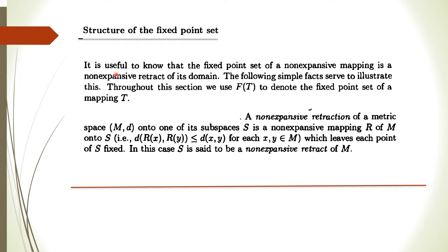What do we mean by non-expansive retract? A non-expansive retraction of a metric space M onto one of its subspaces S is a non-expansive mapping R from M onto S, such that the distance of Rx and Ry, where X and Y are members of M, is less than or equal to D(X,Y). If this mapping R leaves each point of S fixed — meaning R(x) = x for every x belonging to S — then this set S is said to be the non-expansive retract of M.